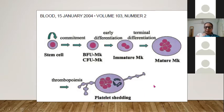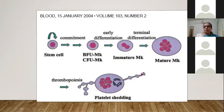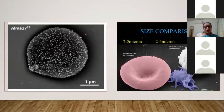The mature megakaryocyte sheds platelets out of its own cytoplasm — a process known as thrombopoiesis or platelet shedding. This cartoon will also help us understand some of the inherited disorders of platelets we will cover later in the talk.